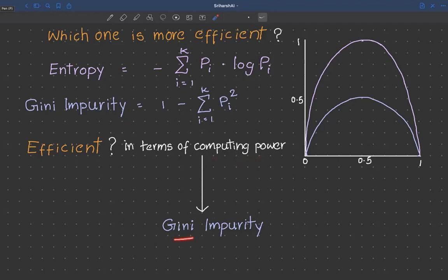The answer is Gini impurity is more efficient because Gini impurity takes less time to compute. One of the reasons being, entropy involves the logarithmic computation. Logarithmic computation usually takes more time. Because of this logarithmic computation, entropy calculation takes more time than Gini impurity.